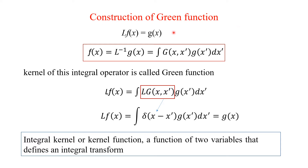We will see the construction of the Green's function. Let us take the equation L·F(x) = G(x), where L is a linear differential operator. F(x) will become L-inverse of G(x). L-inverse is the inverse of the differential operator, which is nothing but an integral. We take the integral of G(x, x') times g(x') dx'. This integral is used to transform the variable x' into x, and the kernel of this integral operator is called the Green's function.